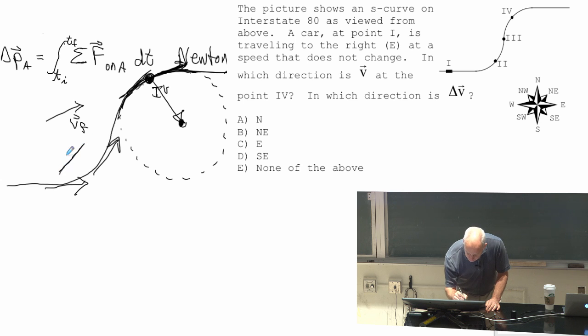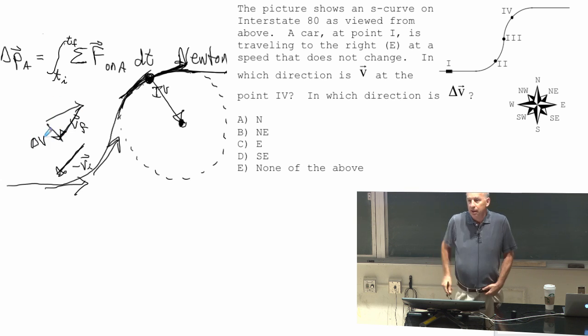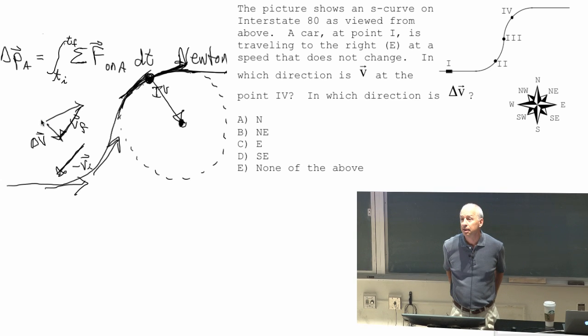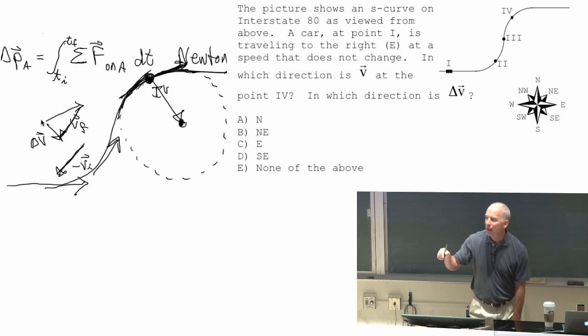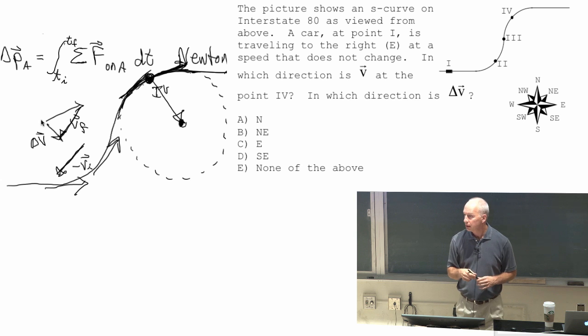So if I put it in the opposite direction, I could call that negative v initial. And if I take v final and I add this negative v initial, then what I get is a delta v that points southeast. So you should be able to do this for any point.